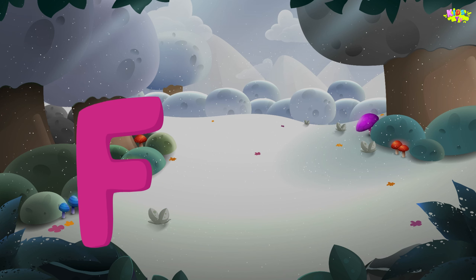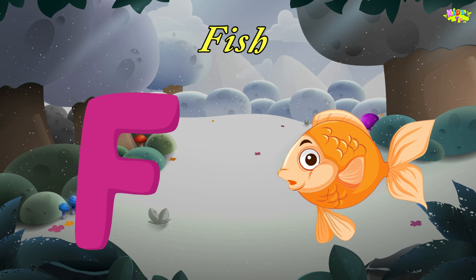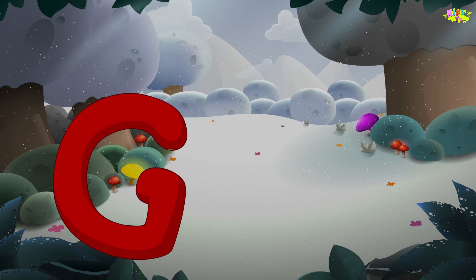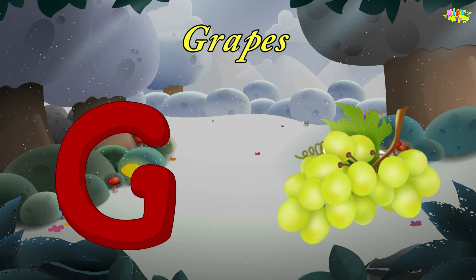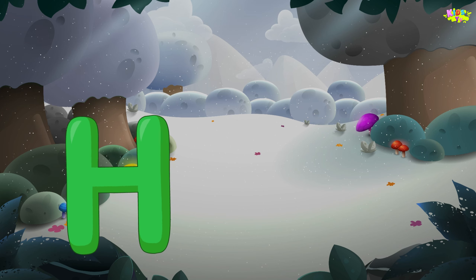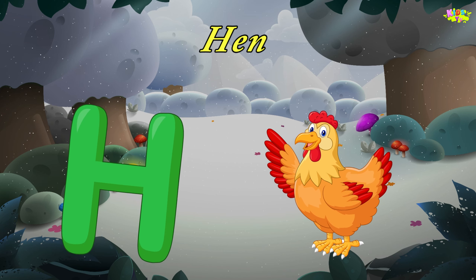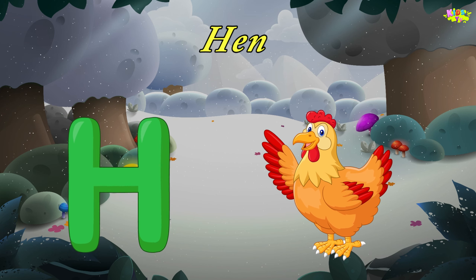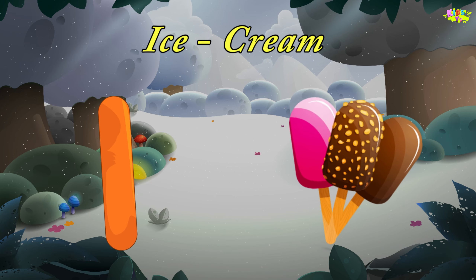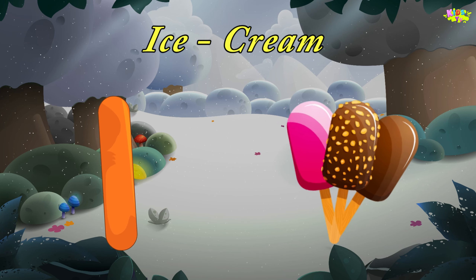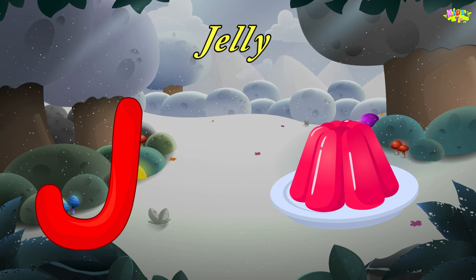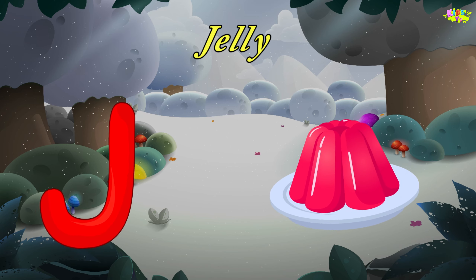F is for Fish. F-F-Fish. F-Fish. G is for Grape. K-K-Grapes. H is for Hen. H-H-H-N. I is for Ice Cream. E-A Ice Cream. I-Ice Cream. J is for Jelly. J-J-Jelly. J-Jelly.